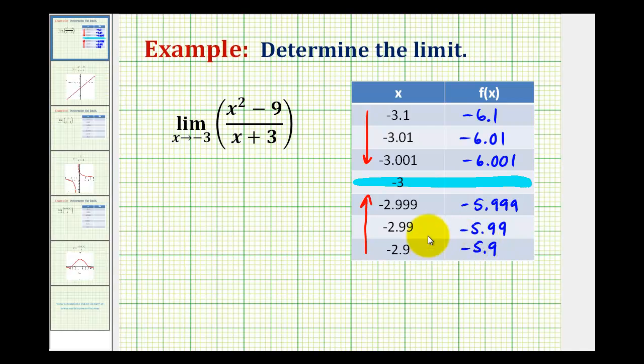And now that we have this table completed, notice that from the left, as we approach negative three, we're approaching negative six. And the same is true as we approach negative three from the right. So by using this table, we can determine that this limit is equal to negative six.